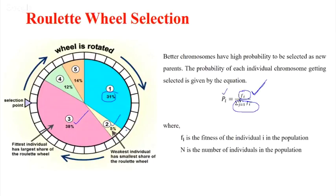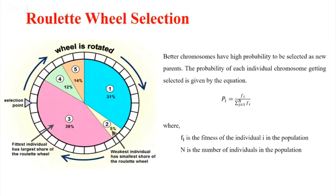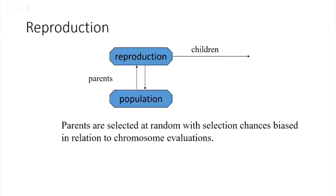In Roulette Wheel Selection, you evaluate each individual's fitness function. Each individual's fitness value divided by the sum of all fitness values gives you the probability. For example, the probability of the first person is 31%, second is 5%, third is 38% — you make a roulette wheel from these probabilities and spin it. The probability of the larger slice being selected is higher. As generations pass, individuals with small probabilities like numbers two, four, and five will automatically get eliminated.